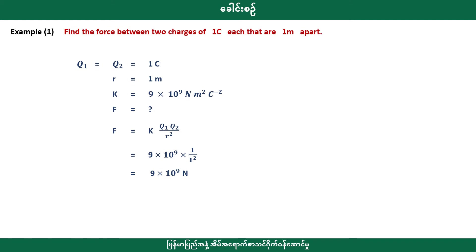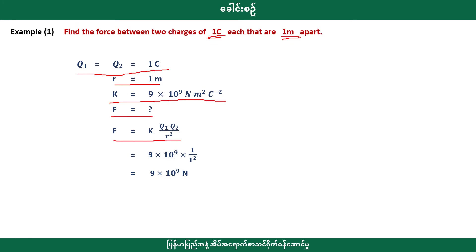Find the force between two charges. The charges are 1.5 Coulombs separated by 1 meter. The calculation gives 2.7 × 10⁻⁴. Then 1.6 × 10⁻³, giving 2.6 and ultimately 9 × 10⁻¹⁹, which is equal to 10. 1 squared equals 10; 9 × 10⁻¹⁹ equals 10.